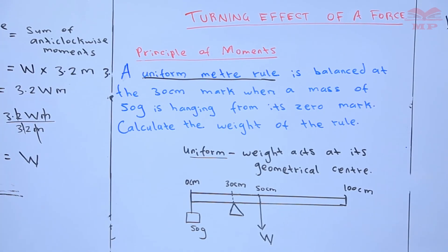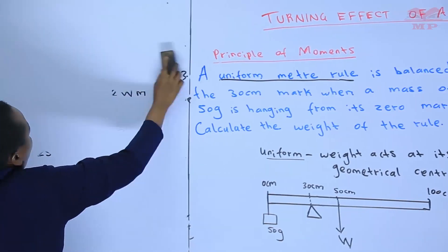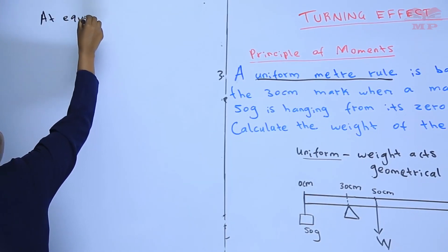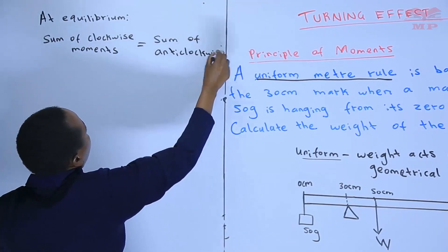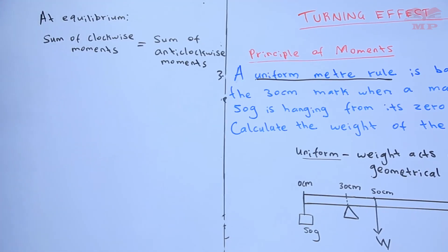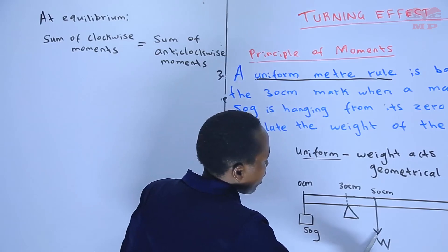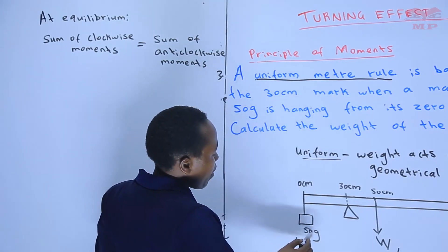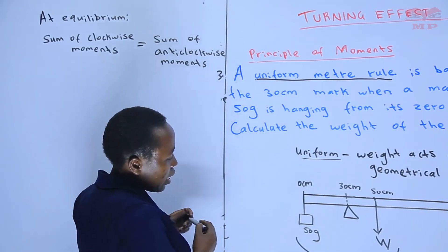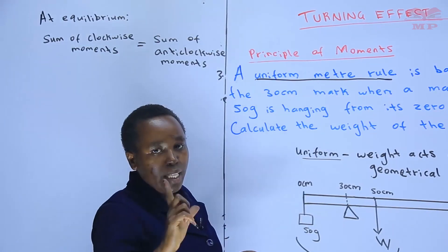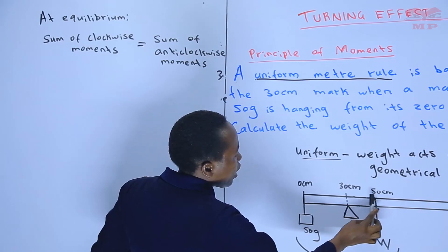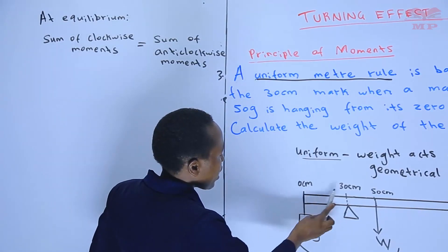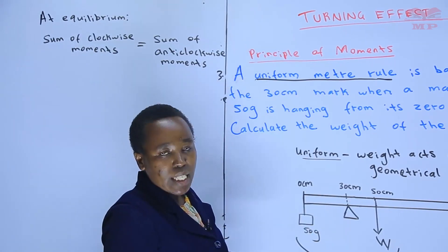Since it is balanced, we state the principle of moments: at equilibrium, sum of clockwise moments equals sum of anticlockwise moments. The weight W of the rule acts at the 50 cm mark — its distance from the pivot is 50 − 30 = 20 centimeters. The hanging mass is at the zero mark — its distance from the pivot is 30 − 0 = 30 centimeters. Now we have the mass but need to find the force it exerts.